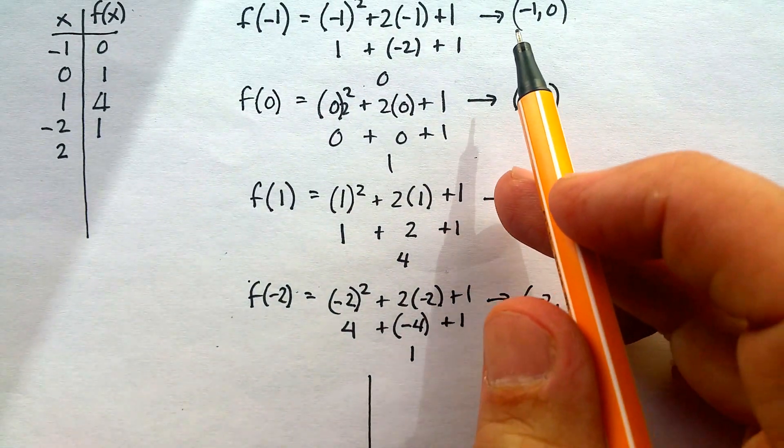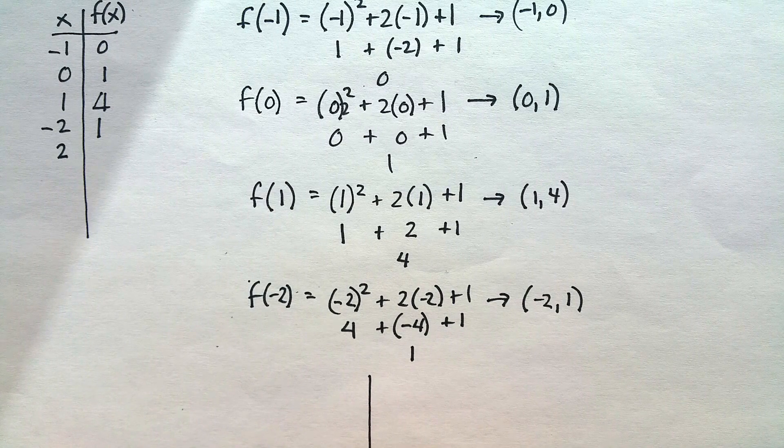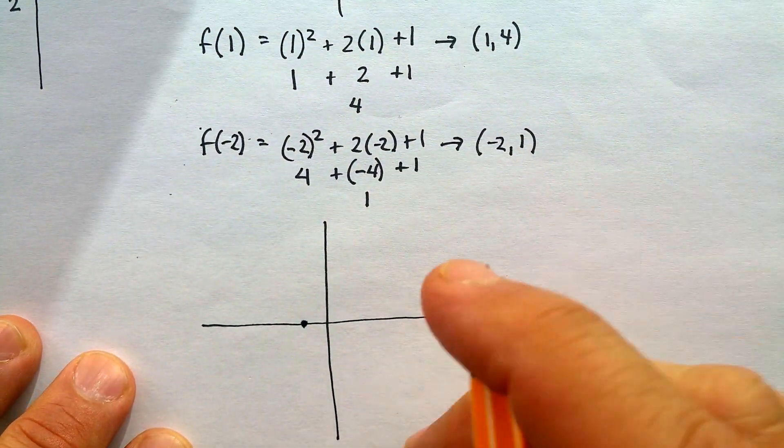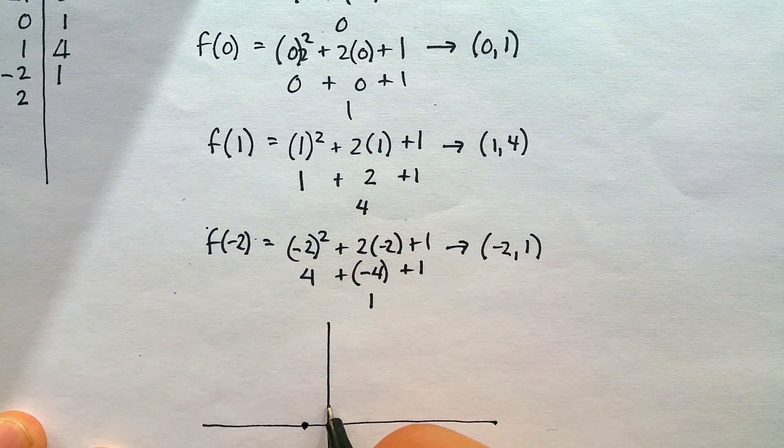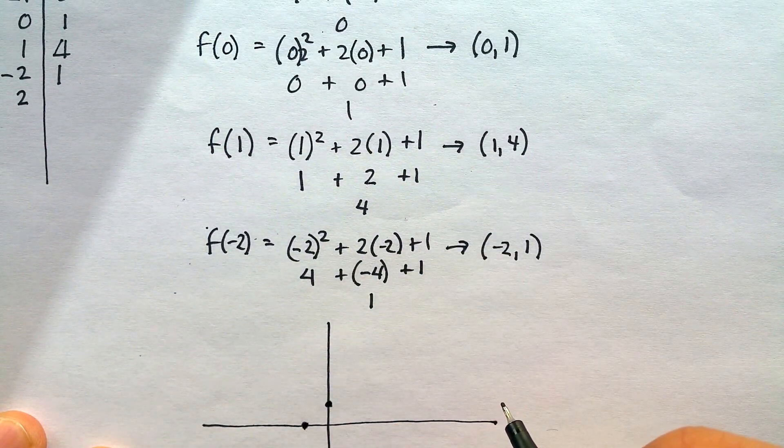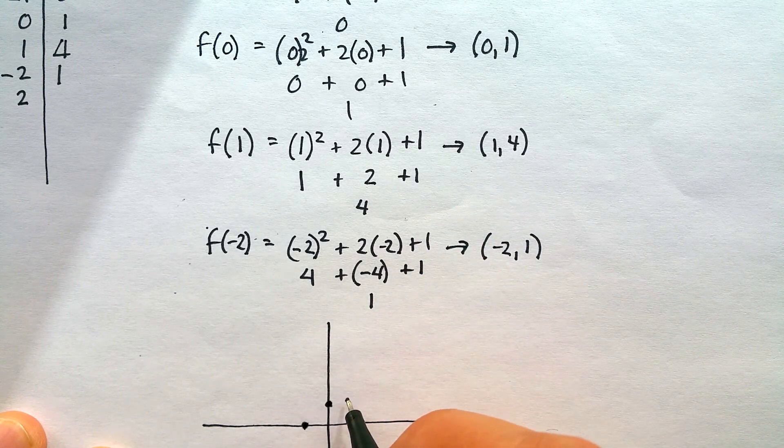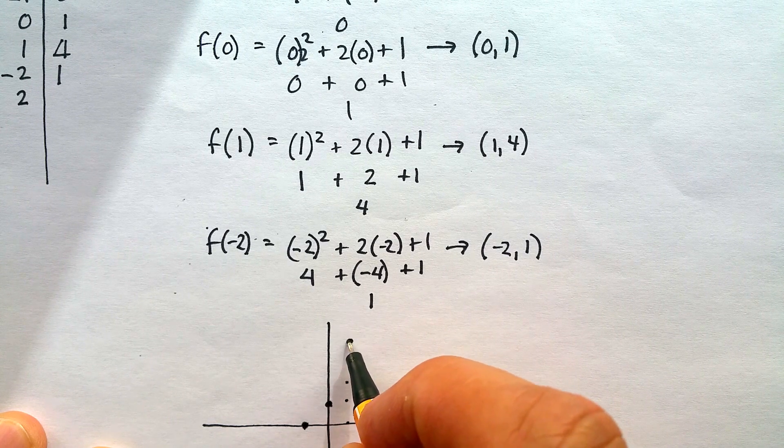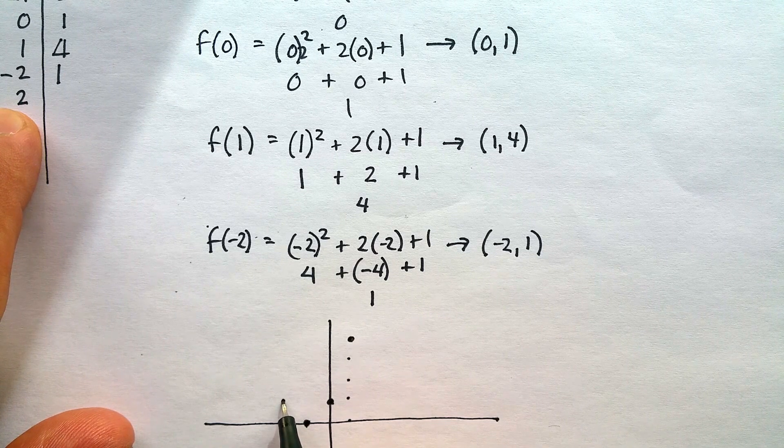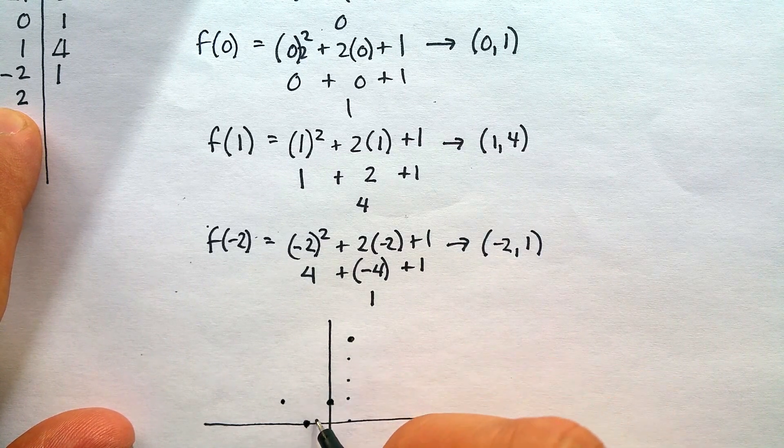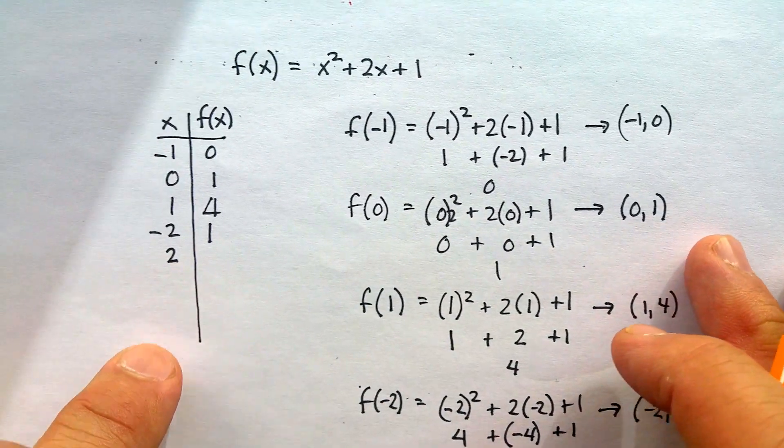My coordinates are negative 1, 0. So negative 1, 0. There it is. The next one is 0, positive 1. So 0, positive 1. Next coordinate is 1, 4. There's 1. 1, 2, 3, 4. Let's do the next one, negative 2, positive 1. So it looks like this is starting to go like this. Let's try the positive 2 and you'll see what happens.